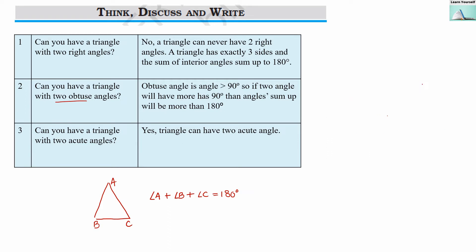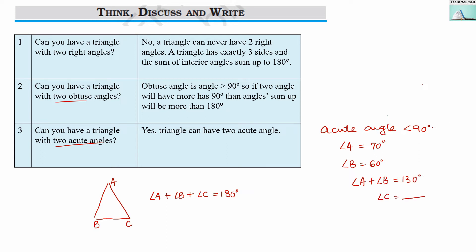The third question: can you have a triangle with two acute angles? An acute angle is one whose measure is less than 90 degrees. Yes, any triangle can have two acute angles. For example, if angle A equals 70 degrees and angle B equals 60 degrees — both are acute — their addition is 130 degrees. We can still find a measure for angle C so that the sum of all three angles equals 180 degrees. So two acute angles are possible in a triangle.